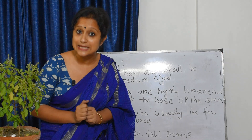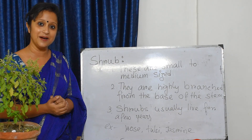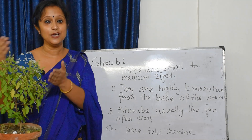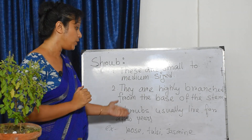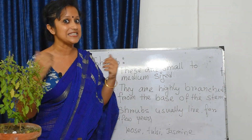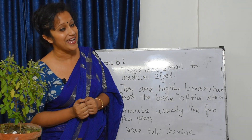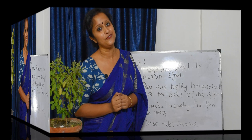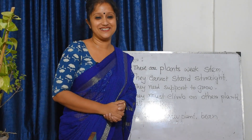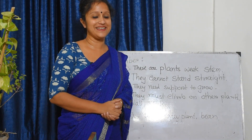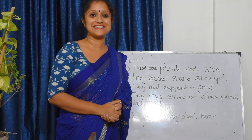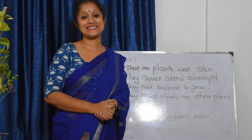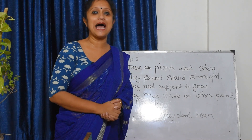What are the examples of shrub? The examples of shrubs are tulsi plant, rose plant, and jasmine plant. Now we will go for the next type of plant. Do you know what is this?